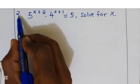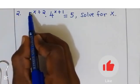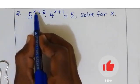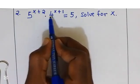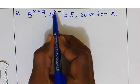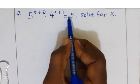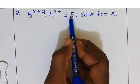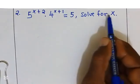Let's do question number 2. We have 5 power x plus 2, multiplied by 4 power x plus 1, this is equal to 5. We need to solve for x.